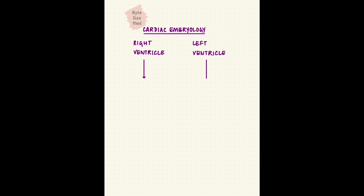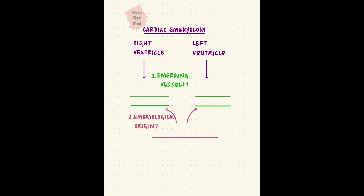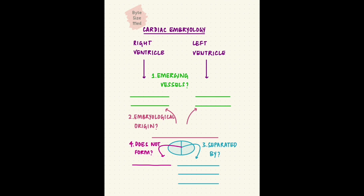Now the big vessels of the heart. The heart has two ventricles, right and left, from which two big vessels emerge. Your task is to recall the names of these two vessels, which embryological structure they come from, the structure that separates them into two vessels, and what would happen if that separating structure doesn't form. Pause the video here and take as much time as you need.